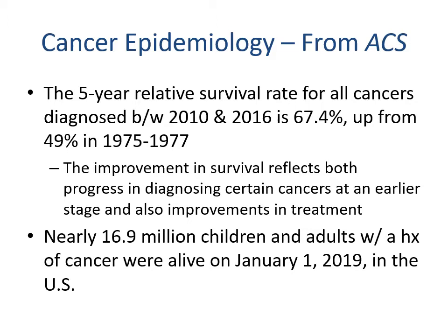The five-year relative survival rate for all cancers diagnosed between 2010 and 2016 is 67.4 percent, up from 49 percent in 1975 to 1977. This increase reflects both progress in diagnosing cancers at earlier stages and improvements in treatment. Nearly 16.9 million children and adults with a history of cancer were alive as of January 1st, 2019 in the U.S.